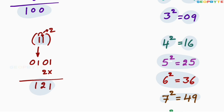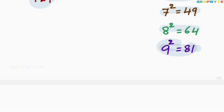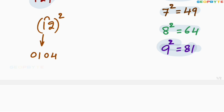I hope you got my point. Let us take the 12 square. Then multiply 1 with 2: 1 into 2 is 2. Multiply that 2 with 2: 2 into 2 is 4. Leave the first space, write that 4 here. Add these two values: 4, 4 plus 0 is 4, 1. So 12 square is equal to 144.